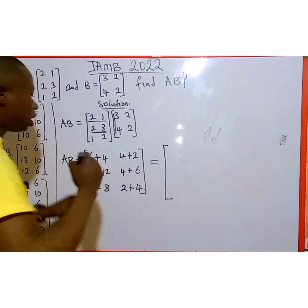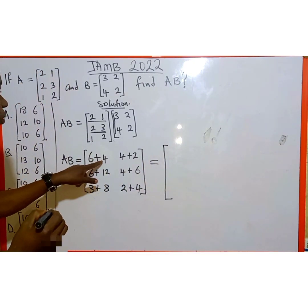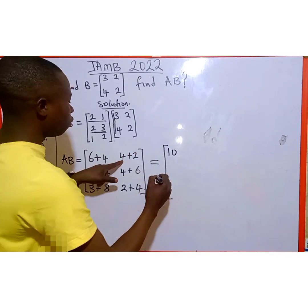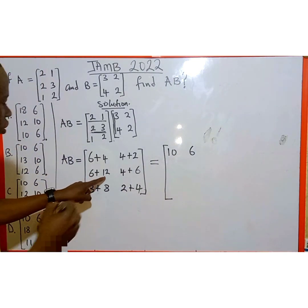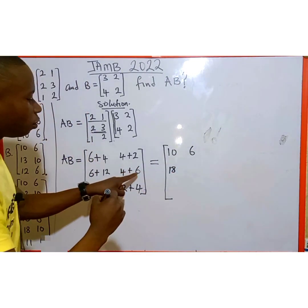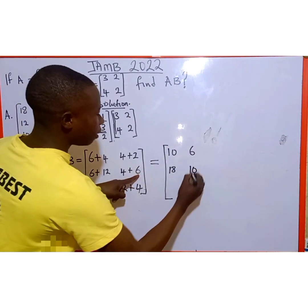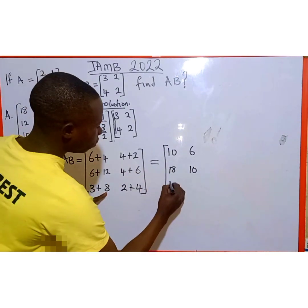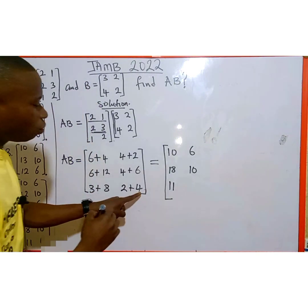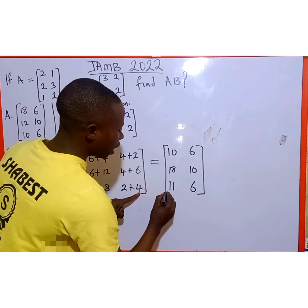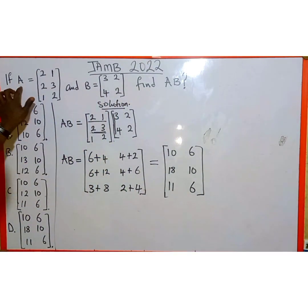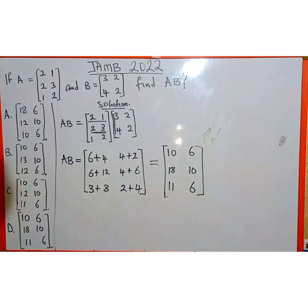So A multiplied by B is equal to: 6 plus 4 gives 10, then 4 plus 2 gives 6. Coming down, 6 plus 12 gives 18, then 4 plus 6 gives 10. Then 3 plus 8 gives 11, and 2 plus 4 gives 6. This is the final answer when you multiply matrix A by matrix B. Checking the options A to D, we notice that option D satisfies our answer.